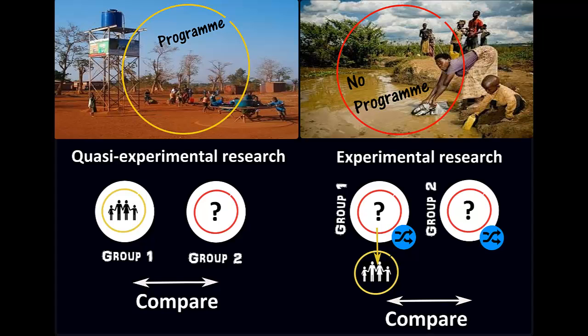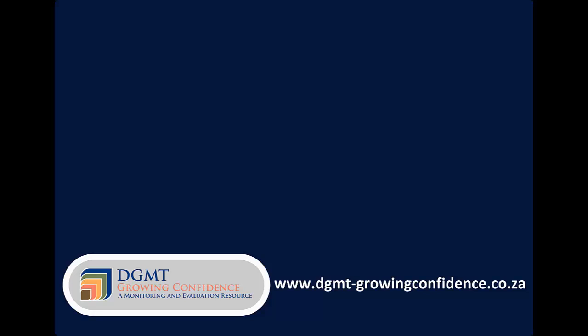There are ways to do quasi-experimental research that will reduce the risk of biased answers. On our website, we provide access to a useful chart created by J-PAL, which explains the different designs and the assumptions that underlie them. We hope that this video presentation has assisted you to understand the basic concepts around measuring the progress and effectiveness of social programs. You can also read, download, or print the text for this video on the Growing Confidence website, where we take you systematically through the information and steps needed to establish the effectiveness of your program. Thank you for watching and listening.